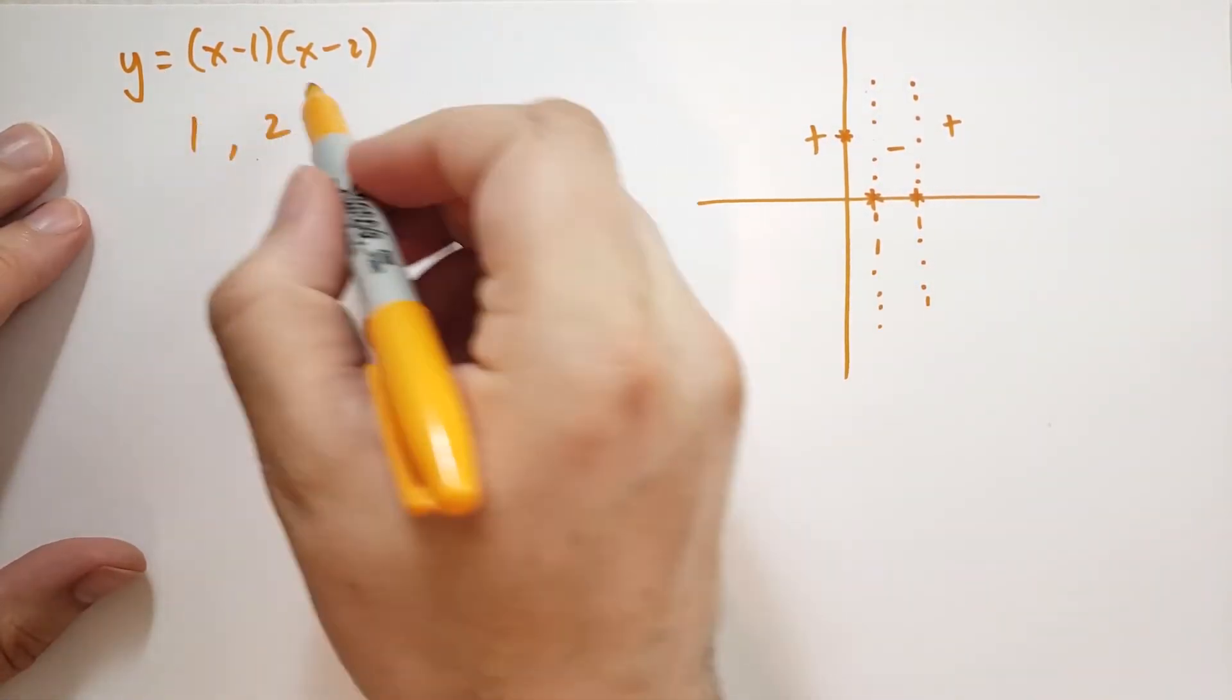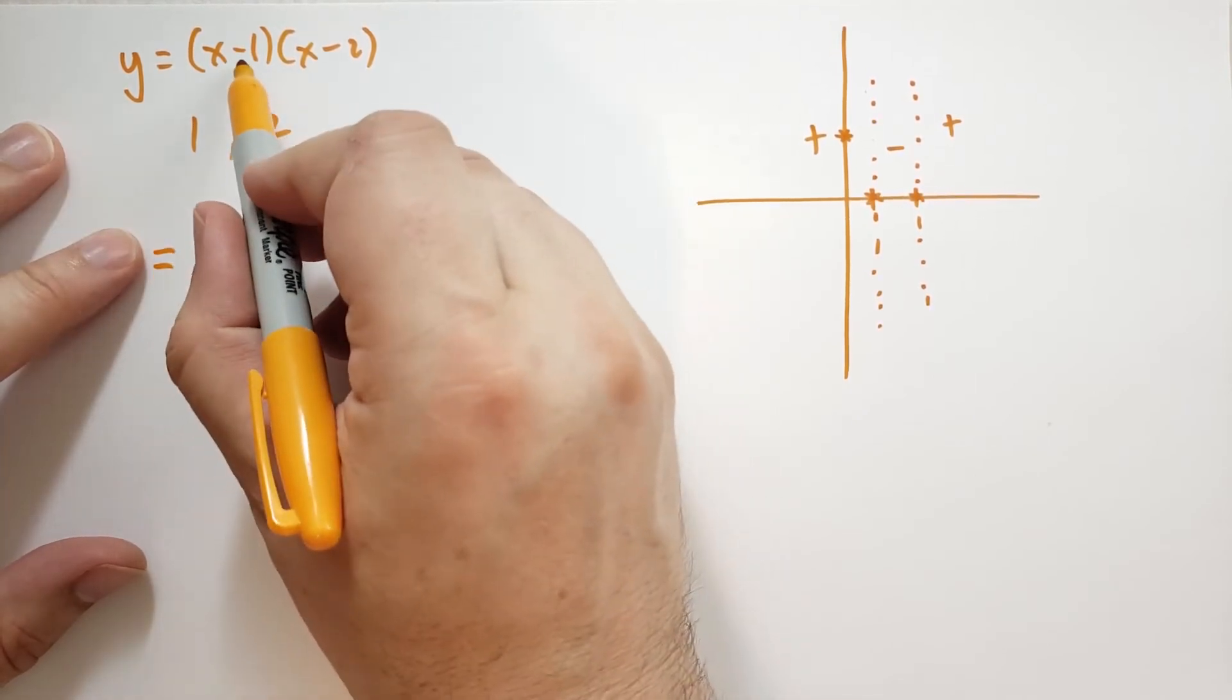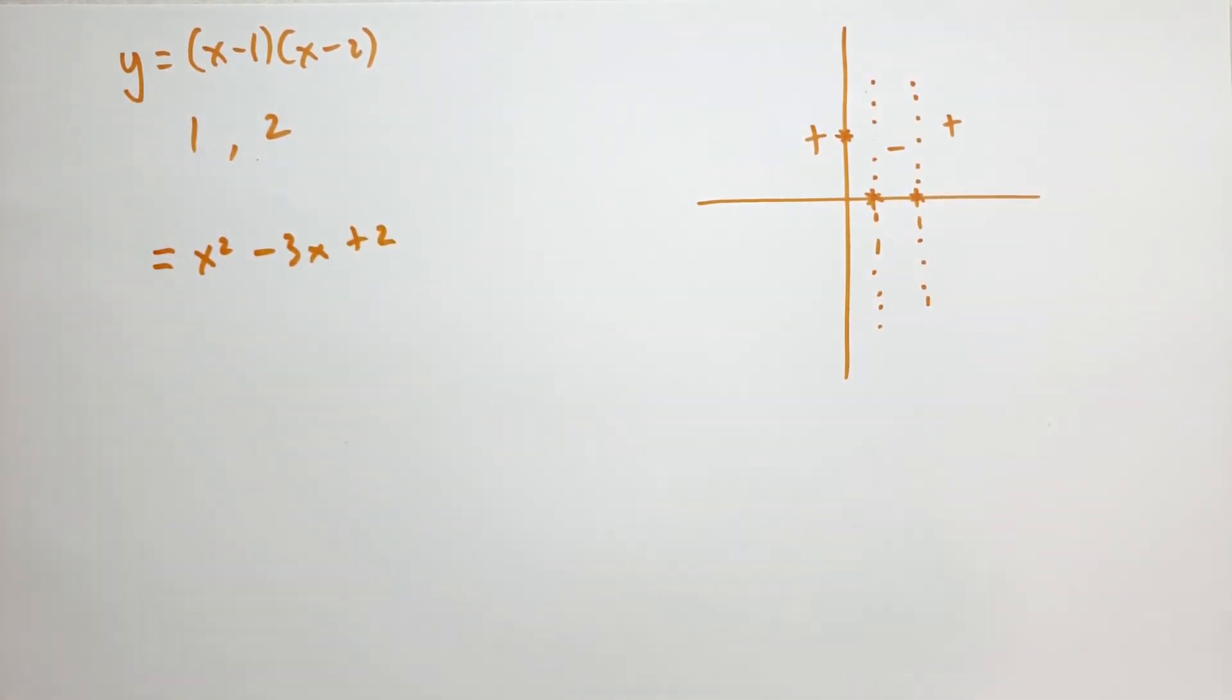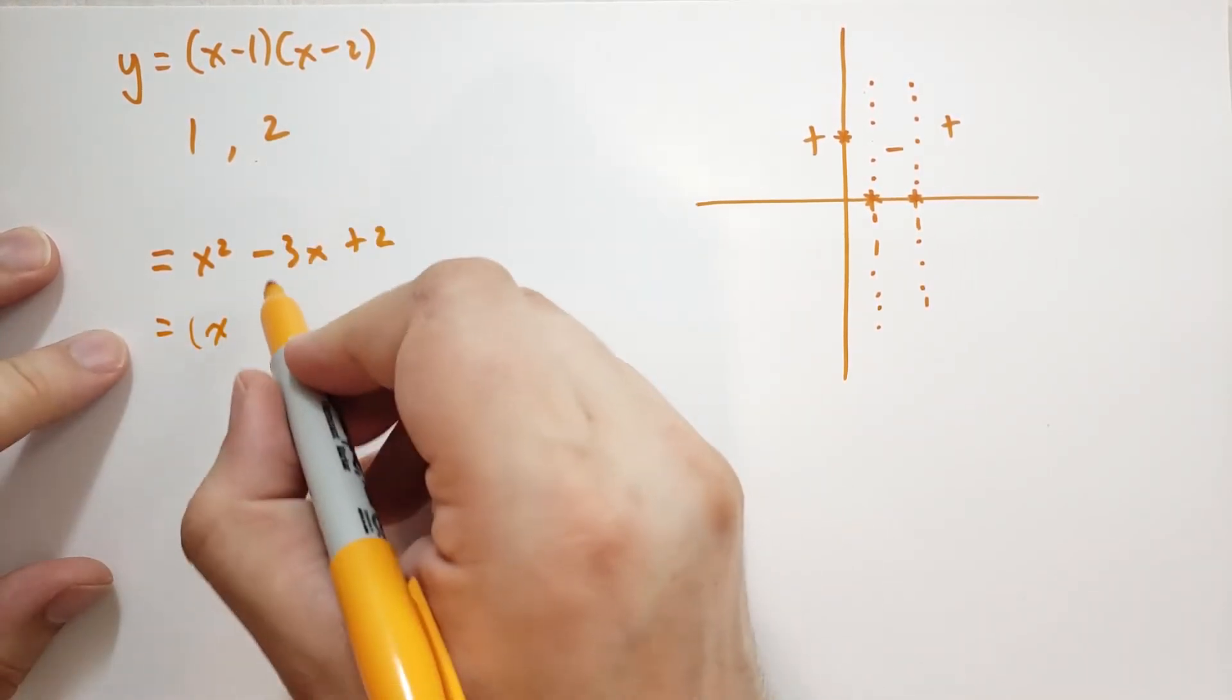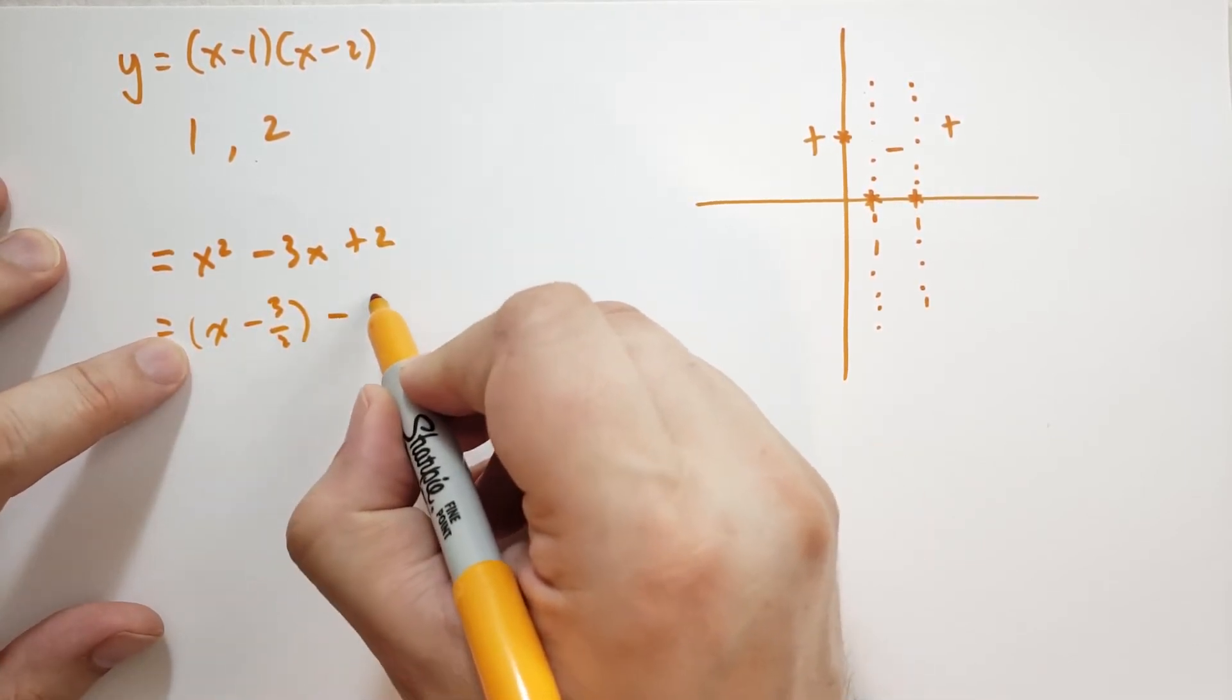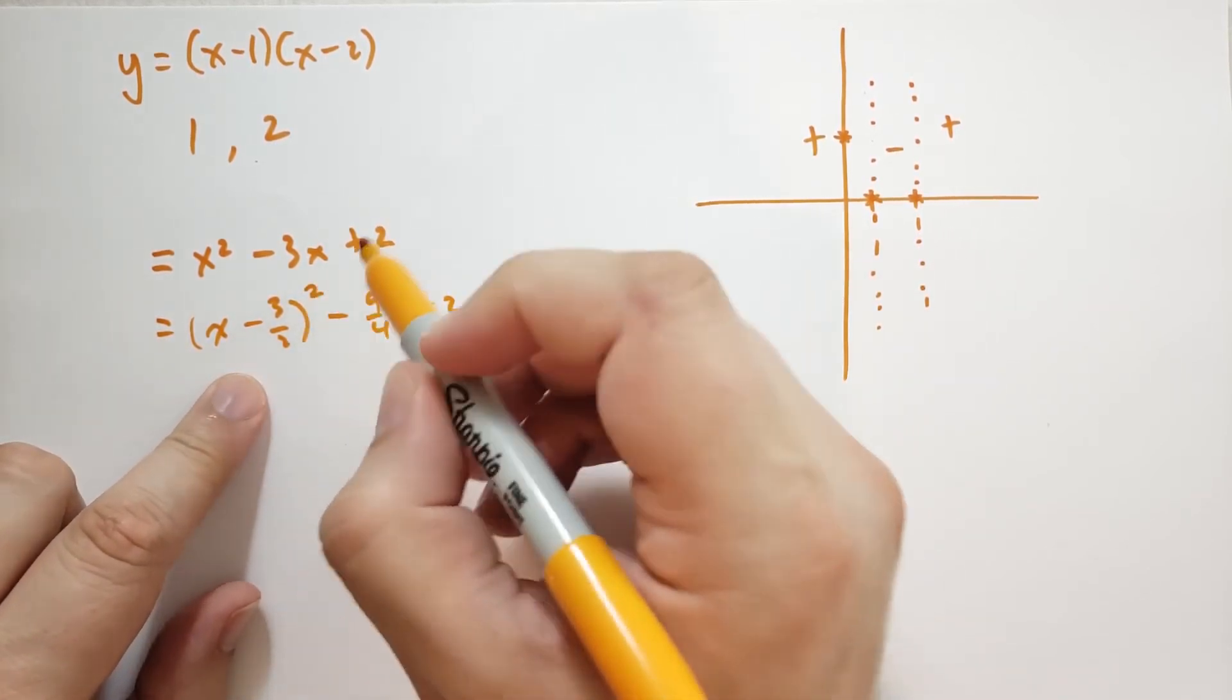If you don't recognize it, let's actually multiply this out. So we're going to get x squared, and then we have a minus 1x and a minus 2x. We have minus 3x's all together, and then finally plus 2. And if we were to complete the square, then we would have x minus 3 halves, and then we have to subtract 9 fourths, and we have that plus 2 that's left over. This is squared.